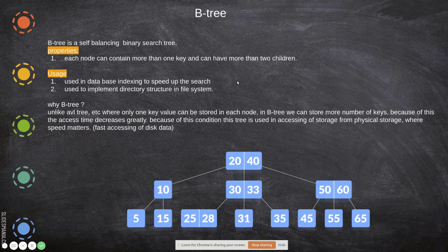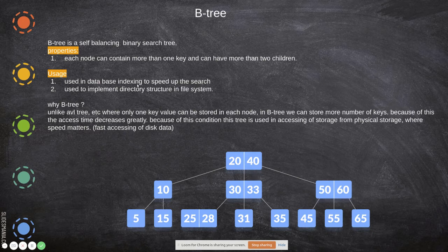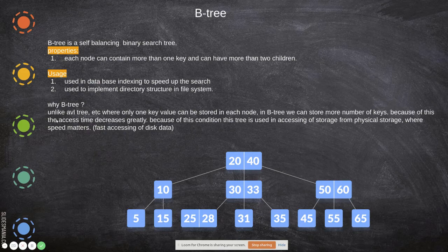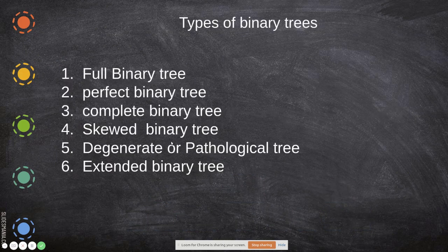A B-tree is a self-balancing search tree where each node can contain more than one key and can have more than two children. For example, a root node can consist of two key values. It is used in database indexing to speed up the search process, and to implement directory structures in file systems. Unlike an AVL tree where only one key is stored, B-trees store multiple keys per node, reducing access time and making it ideal for physical storage where fast disk access matters.